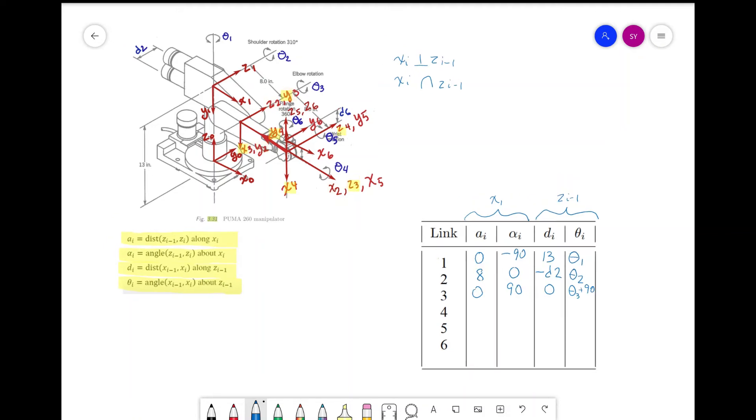Now let's look at link 4. We see that a_i is 0. Now let's look at alpha and see that z4, z3, and x4 like this. Positive rotation is this way, and we need to rotate negative 90 degrees to get the axis to align.